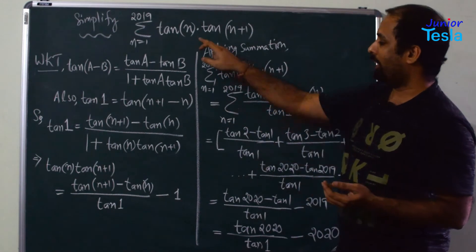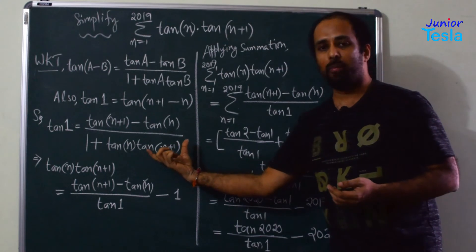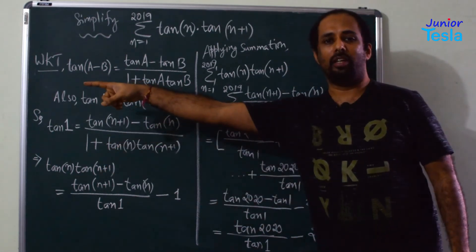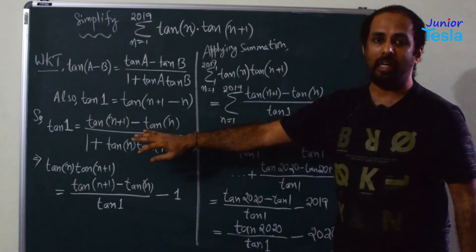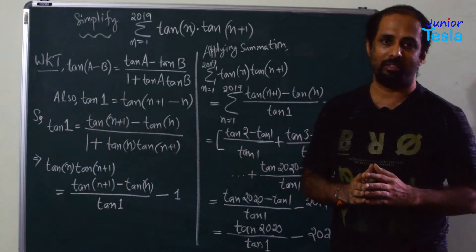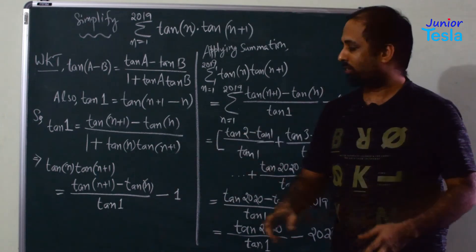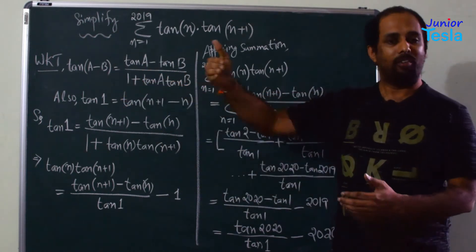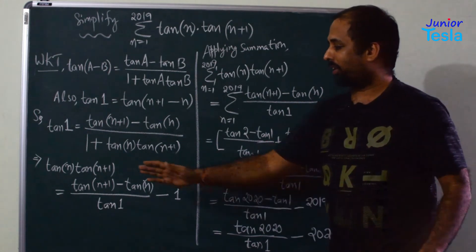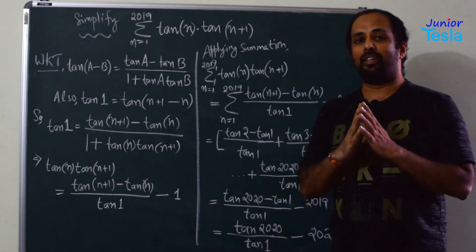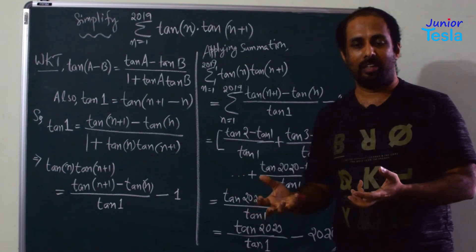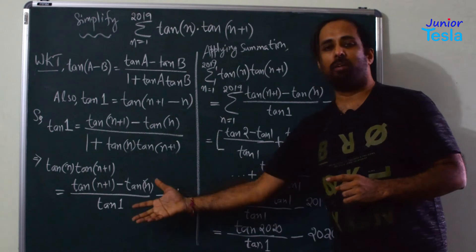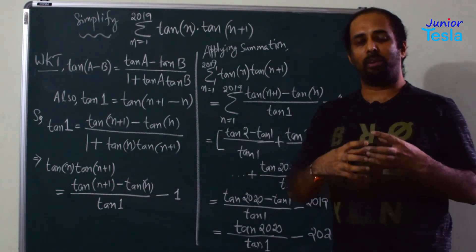Now let us rearrange, because we need to find the value of tan(n)·tan(n+1), which is in the denominator. Taking the denominator to the left-hand side: 1 + tan(n)·tan(n+1) = [tan(n+1) − tan(n)] / tan(1). Then, isolating tan(n)·tan(n+1): tan(n)·tan(n+1) = [tan(n+1) − tan(n)] / tan(1) − 1. We have successfully written the product of two terms as a difference of two terms.